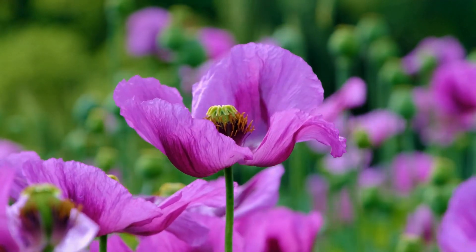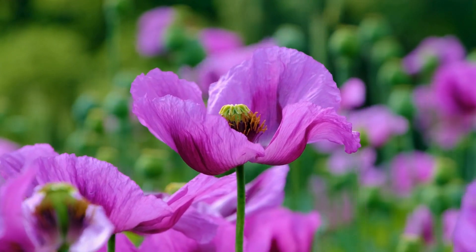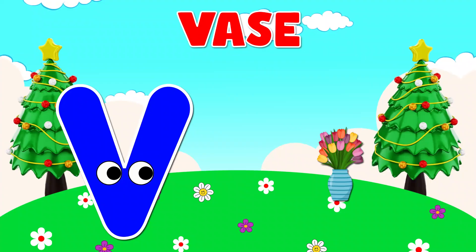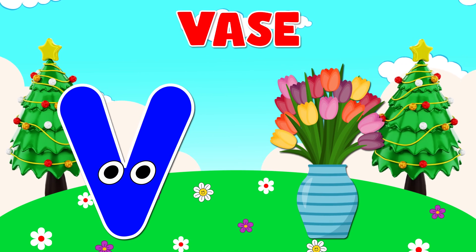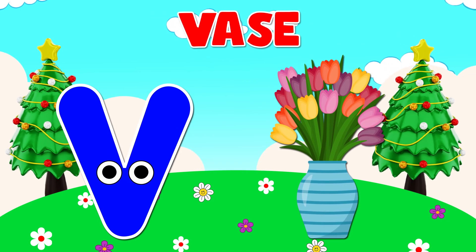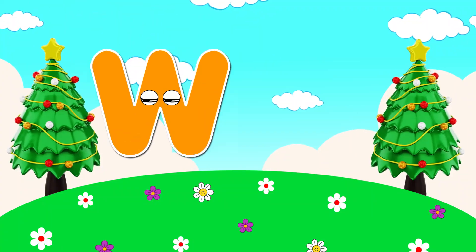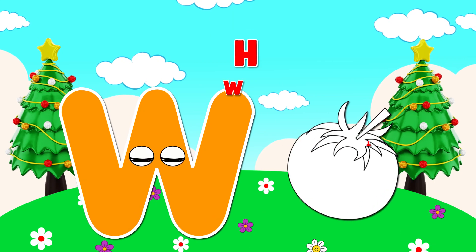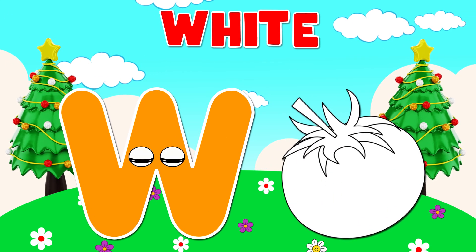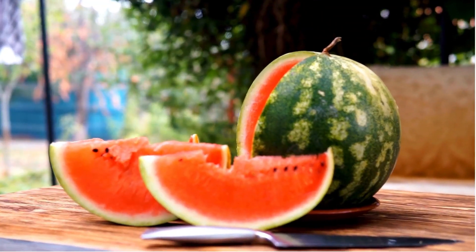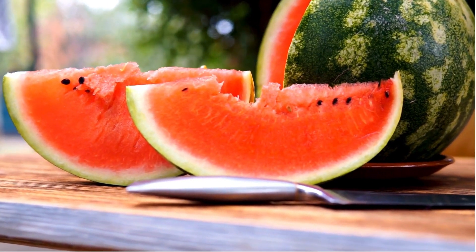V is for vase. V, v, vase. V is for violet. V, v, violet. W is for white. W, w, white. W is for watermelon. W, w, watermelon.